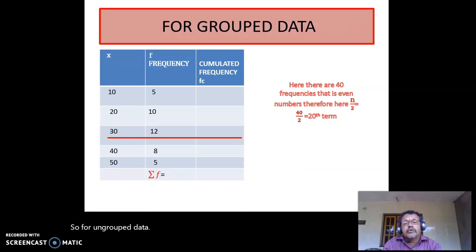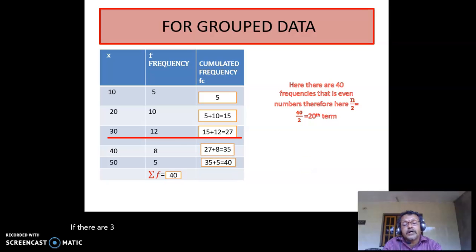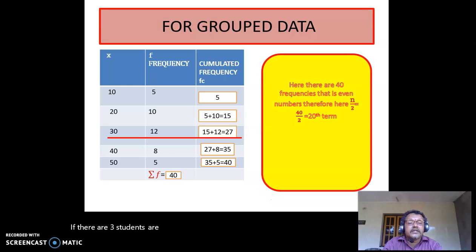Now for grouped data. Here there are 40 scores total. We have to find the 20th term. First, find cumulative frequency: 5, then 5 plus 10 equals 15, 15 plus 12 equals 27, 27 plus 8 equals 35, 35 plus 5 equals 40. So n by 2 means 40 by 2, which is the 20th term.